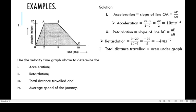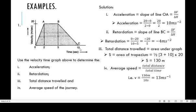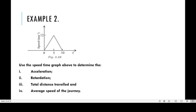To calculate total distance traveled, find the area of the trapezium under the graph. Area equals half times the sum of the parallel sides times height. Parallel sides AB and OC: AB is 5 minus 2, which is 3; OC is 10 minus 0, which is 10. The height is 20. Putting it all together: half times (3 + 10) times 20 equals 130 meters. Average speed equals total distance over total time: 130 over 10 equals 13 meters per second.